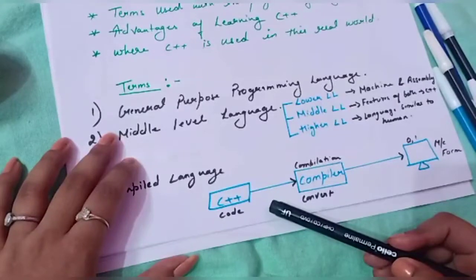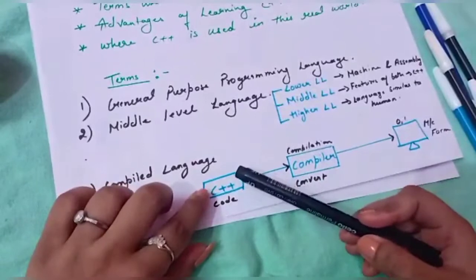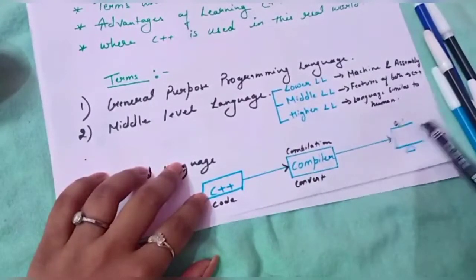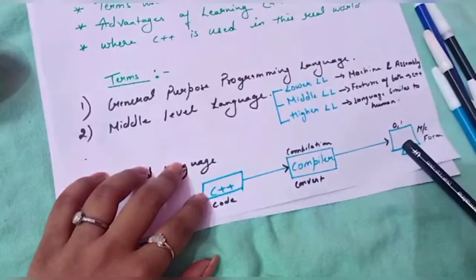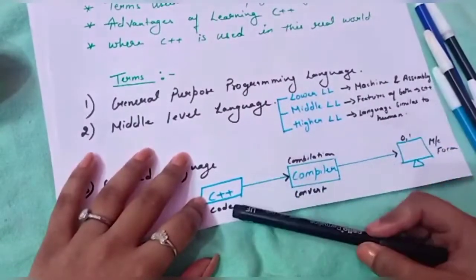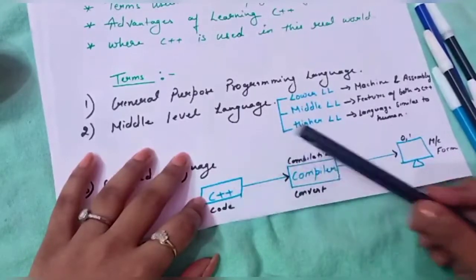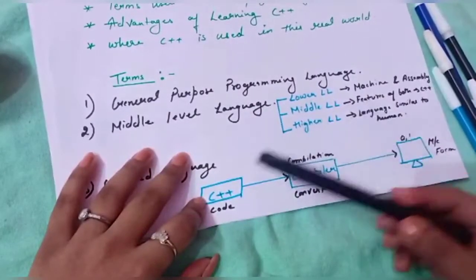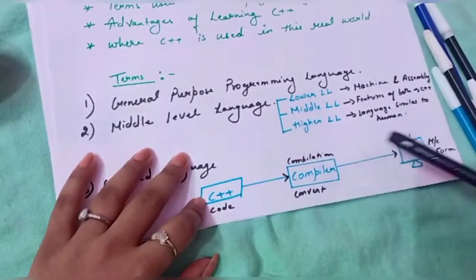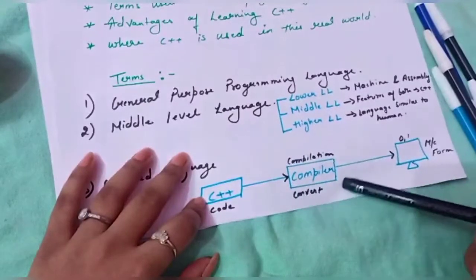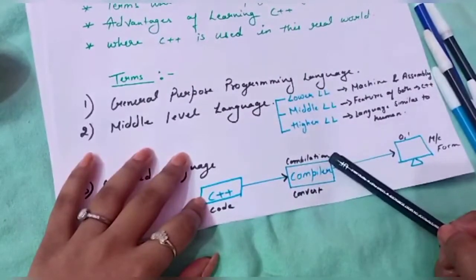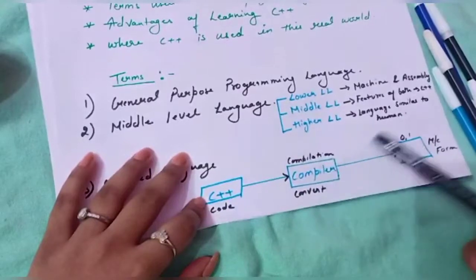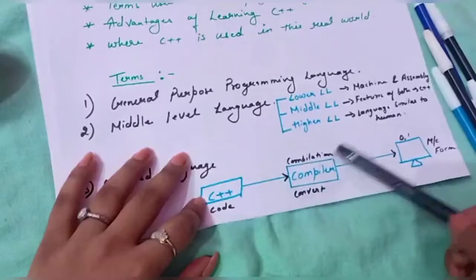The third point is that C++ is a compiled language. We write code using C++ and give instructions to the computer, but the computer understands instructions in the form of zeros and ones. So the C++ code is converted into zeros and ones through a compiler. There is a compiler in between which turns the code into zeros and ones and transfers it to the computer system. This whole process is known as compilation.